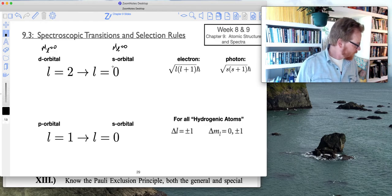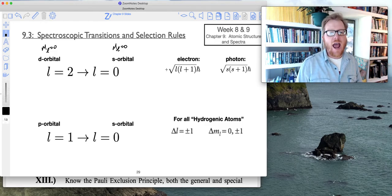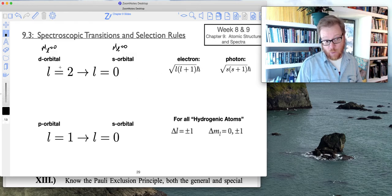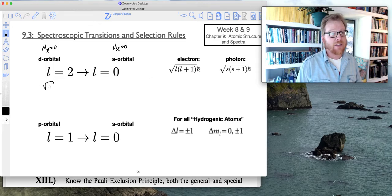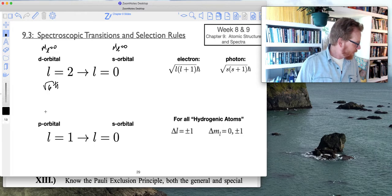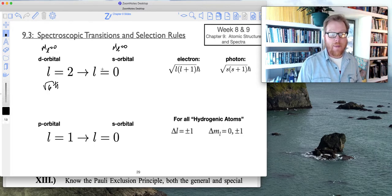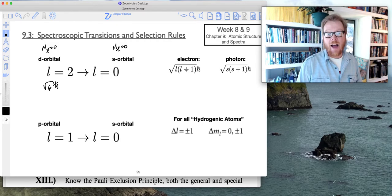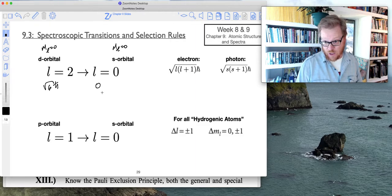If we were to calculate the electron angular momentum, we know l equals 2, so 2 plus 1 is 3 times 2, that's going to be √6 ℏ. When it makes this transition to go to the s orbital, l equals 0, so that's going to be 0 angular momentum.